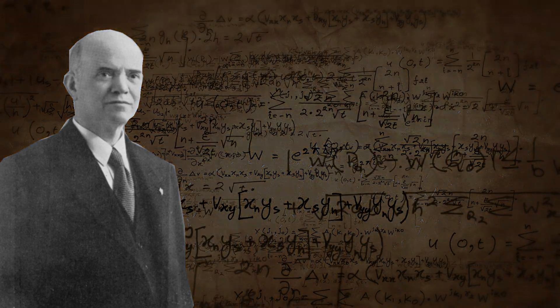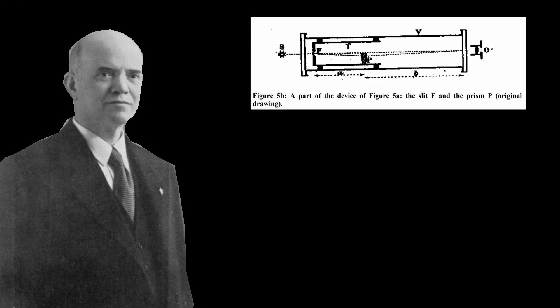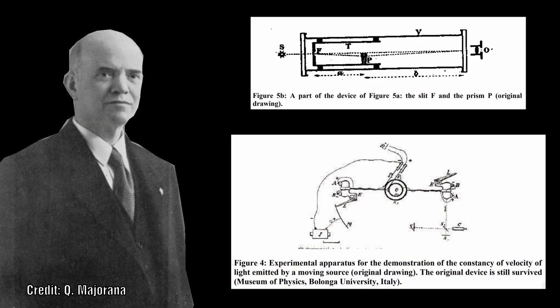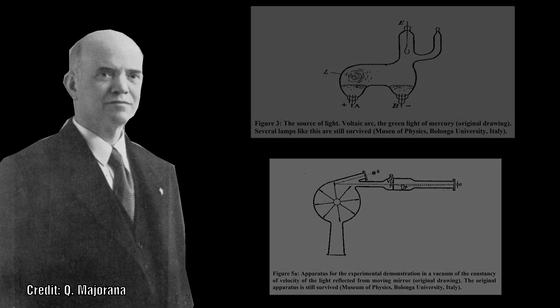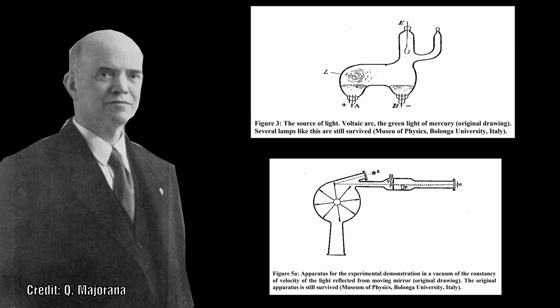He is actually better known for his research related to the second principle of special relativity. He attempted to detect changes in the speed of light emitted or reflected by moving bodies. Despite his view that he should detect a difference in the speed of light, he was actually able to confirm that the speed of light is independent of the speed of its source. As the results were opposite to the one he was attempting to validate, it demonstrates that he was a very careful and meticulous experimenter.